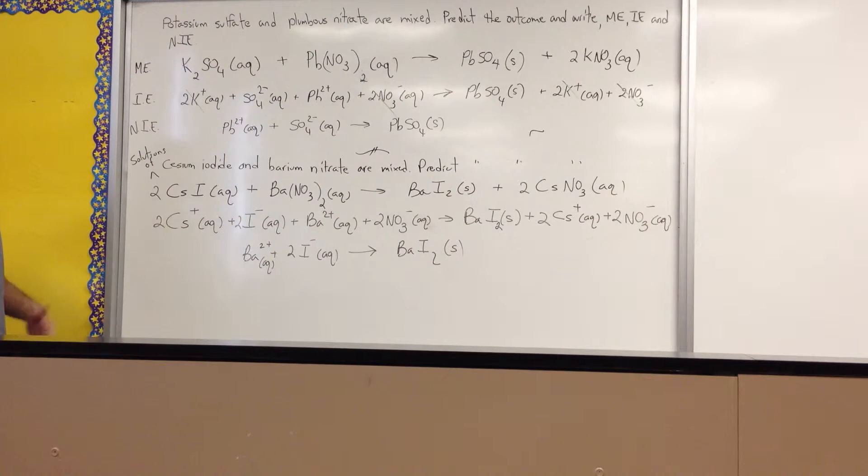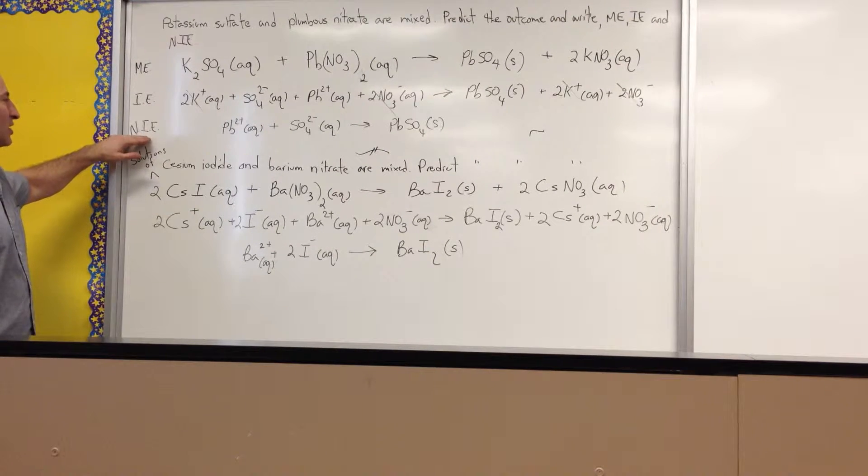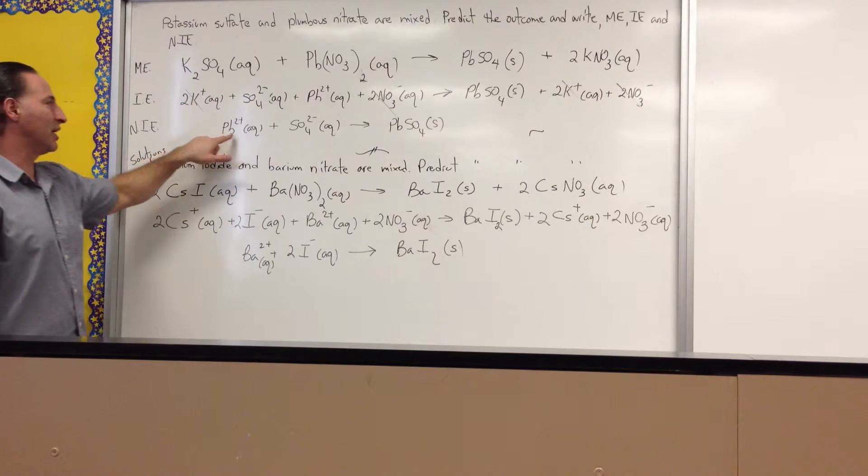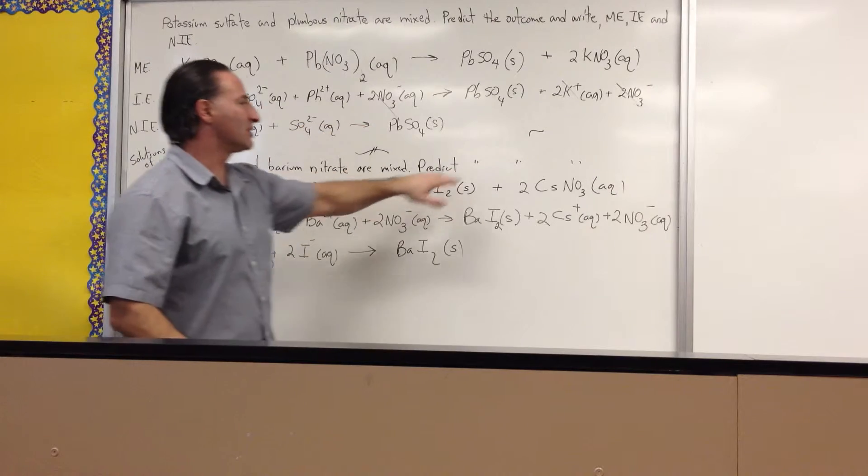Because they appear on both sides of the equation, they're not actually interacting with each other. They're more attracted to the water molecules. They stay in solution. They're soluble. Therefore, they don't participate in the reaction. So, the net ionic reaction is what you get when you cancel out all the spectators. And that's where you get lead cations combining with sulfate to form lead sulfate.